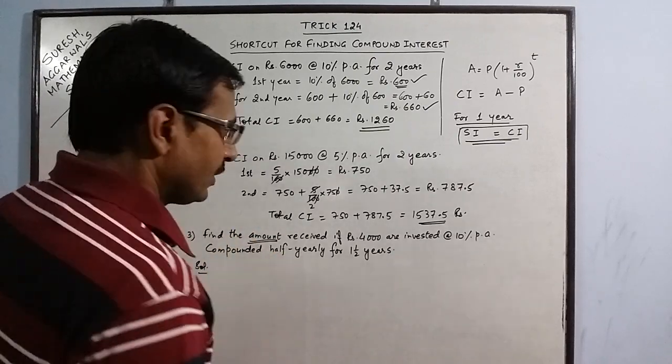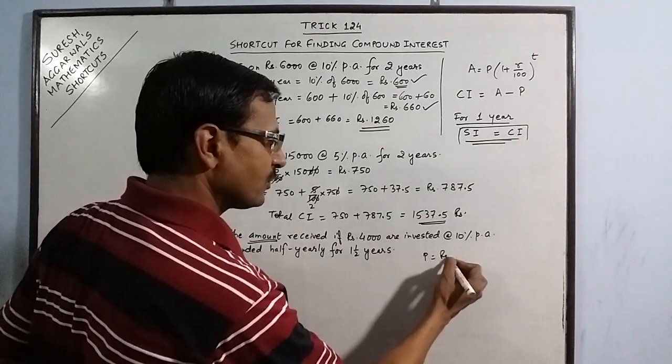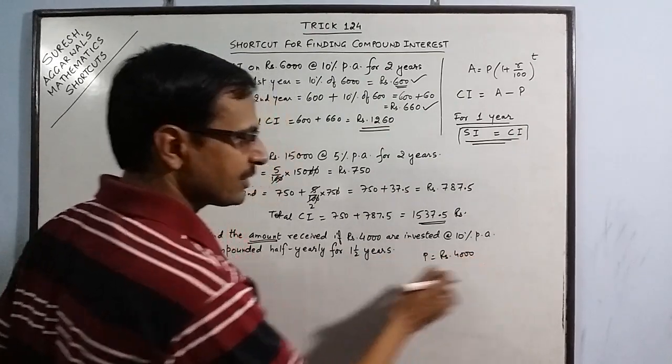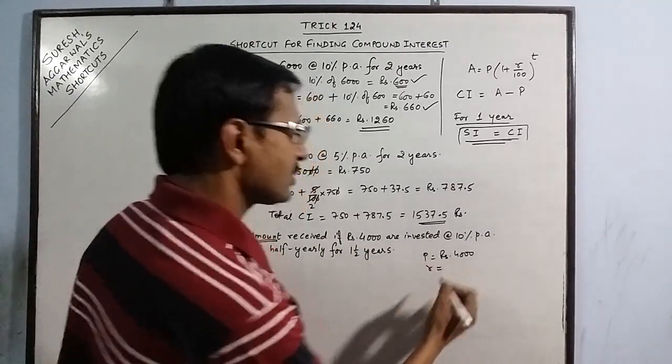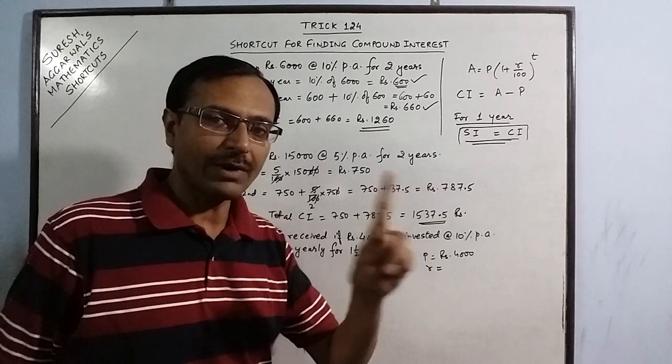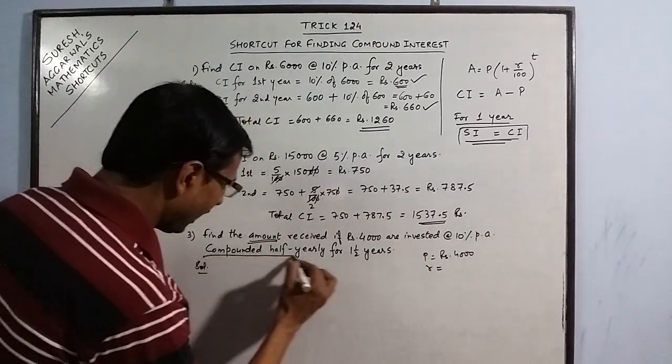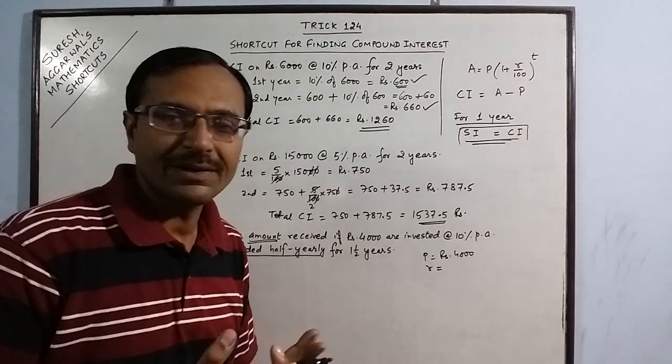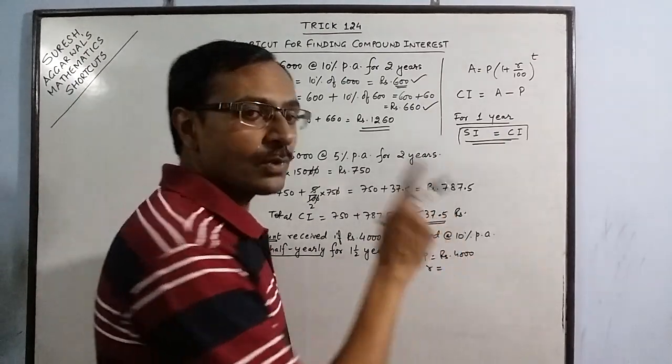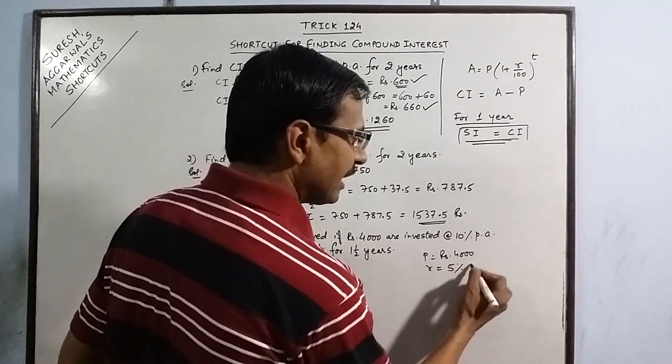Principal is Rs. 4000. Rs. 4000, the first year interest will be calculated on Rs. 4000. Rate of interest, it is 10% per annum. For one year, the rate of interest is 10%. But it is compounded half yearly. Every 6 months, the interest is given. 10% interest is for one year, so for 6 months, it is half of that. 5% half yearly interest.